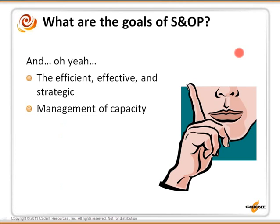We also use S&OP to manage the efficient, effective, and strategic balance of our capacity and capacity planning. You'd like to know what the demand is short term — six months, one year, maybe even further out if you have reliable information — and look at your capacity to decide how to use it more effectively. Decide when you might need to expand your capacity and provide a basis for your case as you take it to your budget meetings.